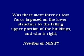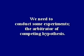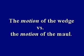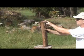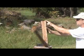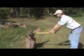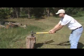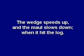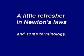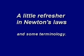Newton or NIST? We need to conduct some experiments, the arbitrator of competing hypotheses. Let's look at the motion of two falling bodies: a splitting wedge and a splitting maul. The motion of this falling wedge and the motion of this maul look similar as both fall through the log. But the wedge speeds up and the maul slows down when it hits the log.